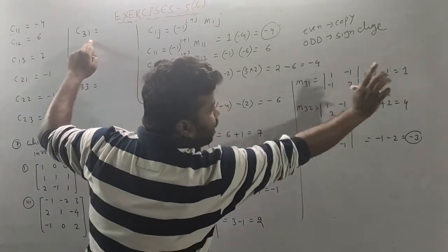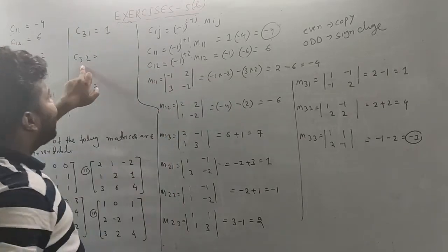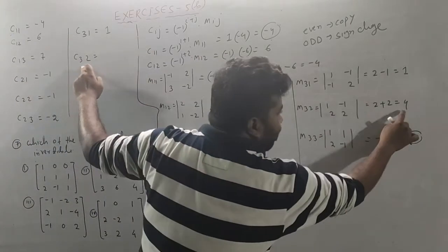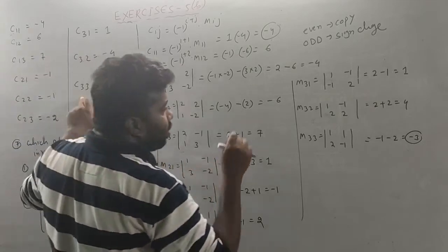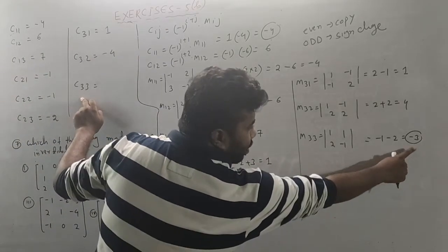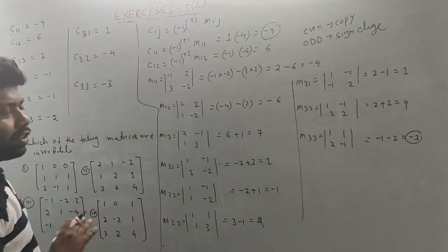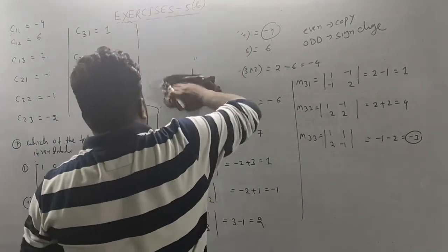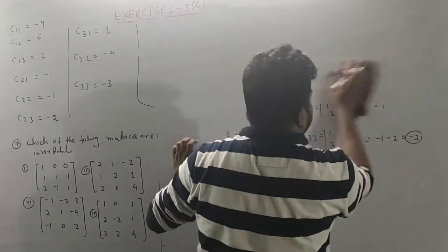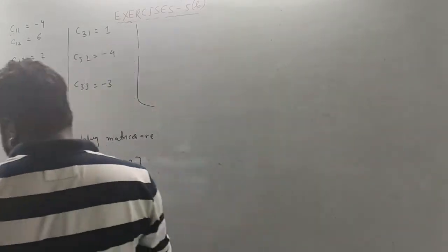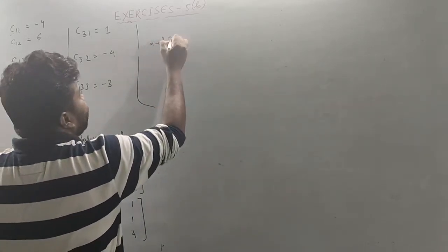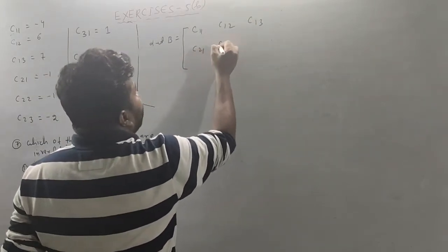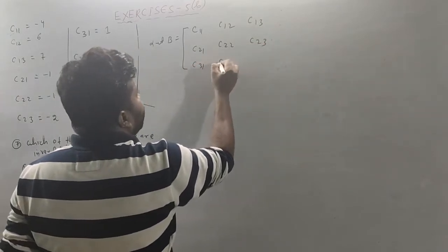Continuing: how many have value 1? C(3,2): 3 plus 2 is 5, odd, so minus 4. For C(3,3): 3 plus 3 is 6, even, copy — giving minus 3. Which one has 1? This one has 1. Co-factors: if you have 1, add 1. So the full cofactor matrix is: C(1,1), C(1,2), C(1,3), C(2,1), C(2,2), C(2,3), C(3,1), C(3,2), C(3,3).